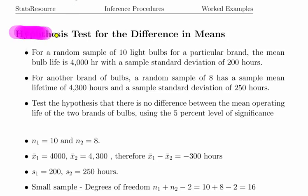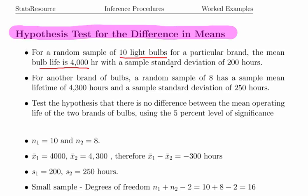In this presentation we're going to look at the hypothesis test for the difference in means. This is a worked example. For a random sample of 10 light bulbs from a particular brand, the mean bulb life is 4000 hours with a sample standard deviation of 200 hours. And likewise for another brand of bulbs, a random sample of 8, so two small samples, has a mean lifetime of 4300 and a standard deviation of 250.